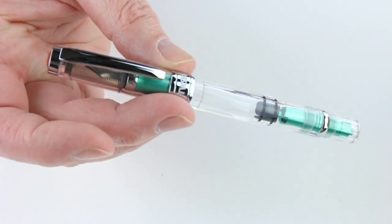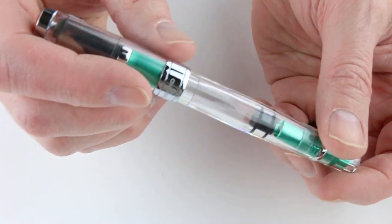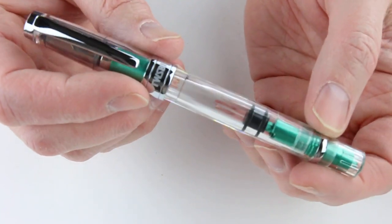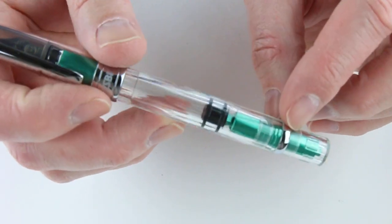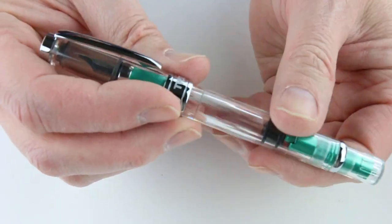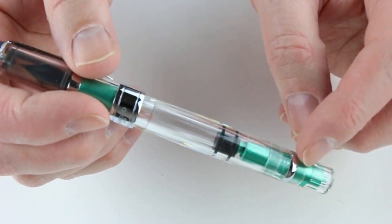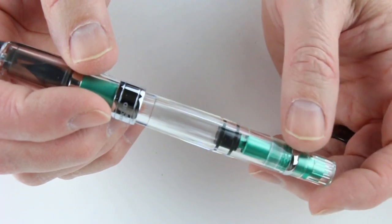And of course, we have the TWSBI Diamond 580AL fountain pen. The AL is an aluminum version, so these green sections are aluminum with plastic on the rest of the pen.